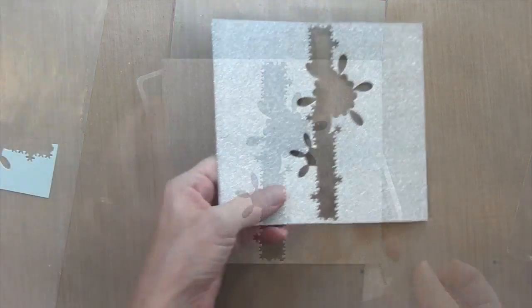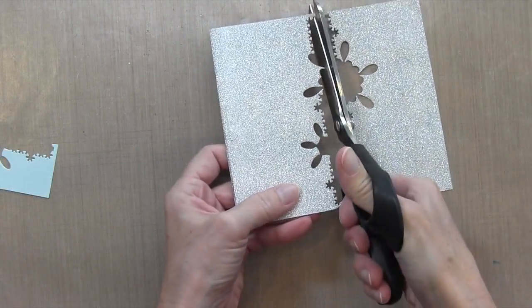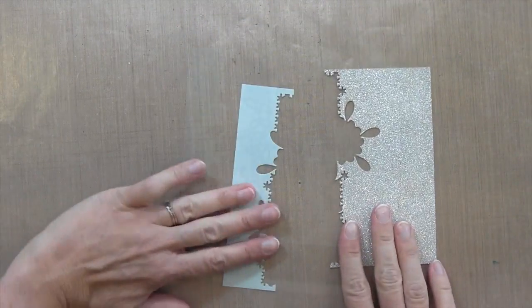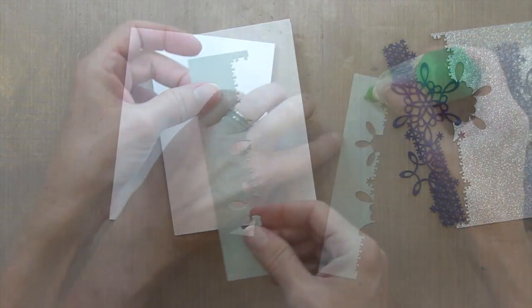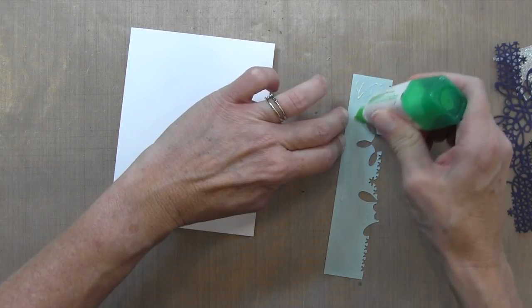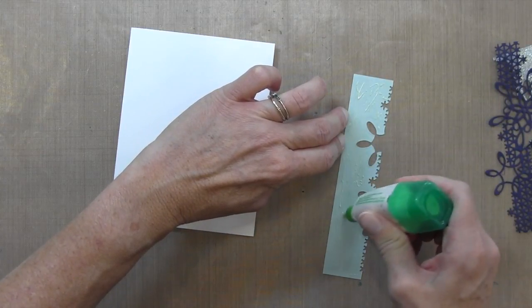For the silver piece, I'm just using the right side, so I'm going to trim that out. Now I have all my pieces cut and I'm going to adhere them to my card base.